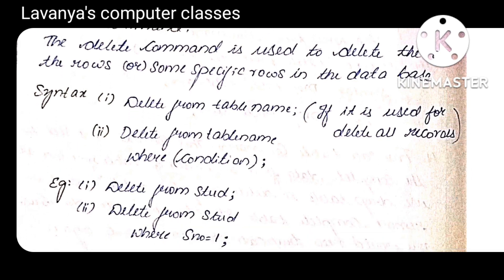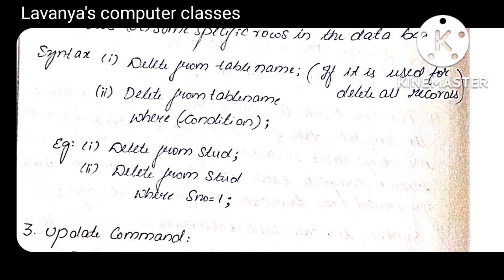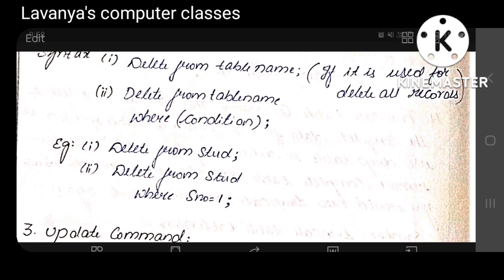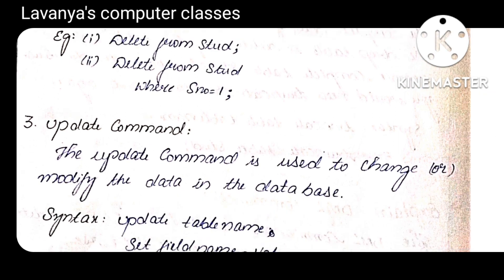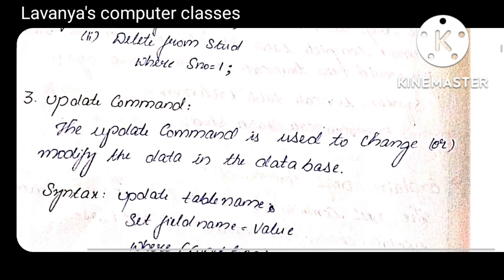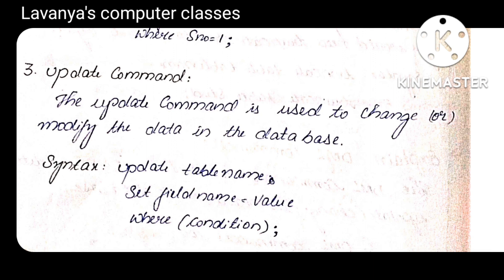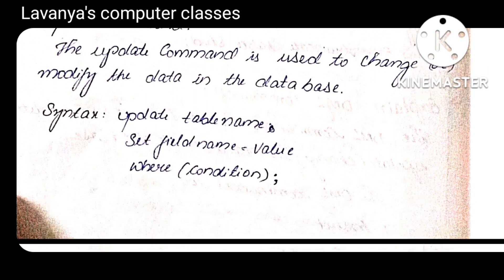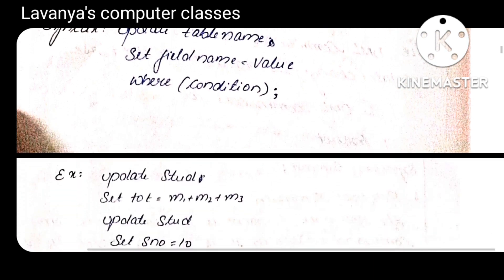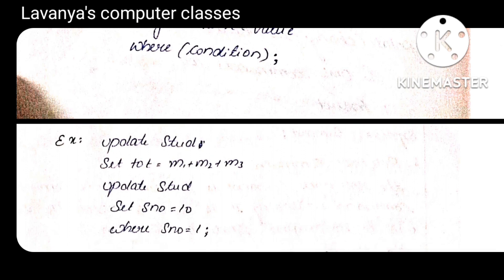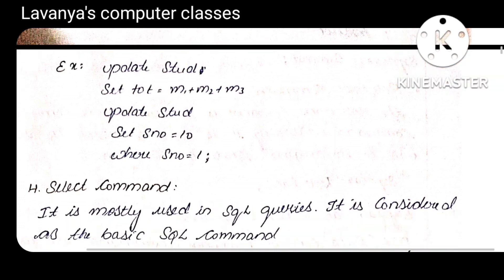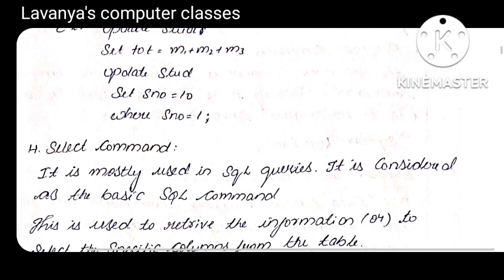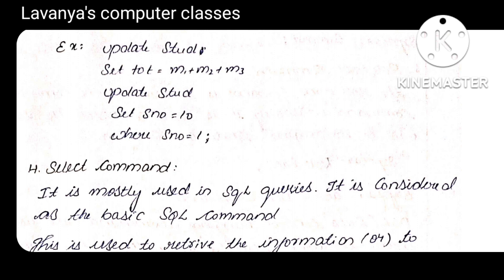There are three syntaxes for DELETE. First: DELETE FROM table_name — this deletes all rows from the table. Or: DELETE FROM table_name WHERE condition — the WHERE clause is used to check the condition and delete a specific record. Next is UPDATE. The UPDATE command is used to change values in the table. Syntax: UPDATE table_name SET new_values.